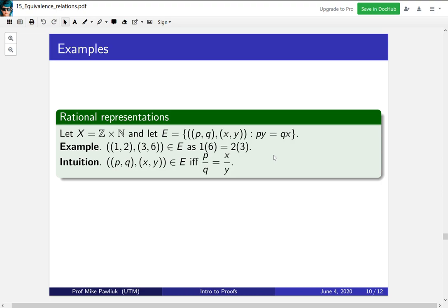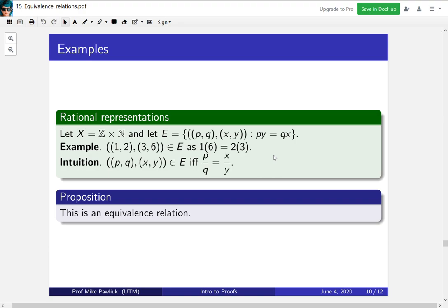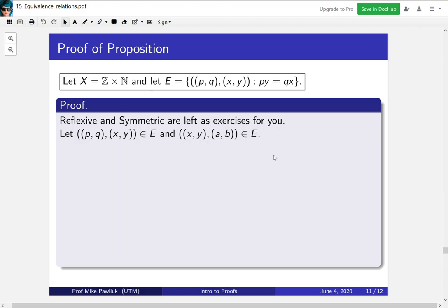Now let's go through and prove that this is an equivalence relation. Now I've written the relation up at the top for you. Reflexive and symmetric are left as exercises for you. They're not really that hard, and you'll see that it's just, it takes you one line each. The interesting one, and the one that has a mathematical idea in it, is transitive. So let's go through that one.